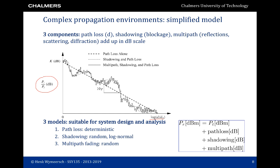Then there will be variations of the power with distance operating at large length scales — this is called shadowing. And finally there are small variations of the received power with small distance variations, at the level of a few wavelengths — this is called multipath. These three impairments add up at the dB scale: path loss depending on distance, shadowing due to blockage, and multipath due to reflection, scattering, and diffraction, each happening at different length scales.